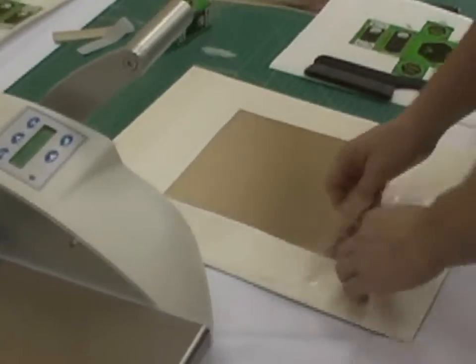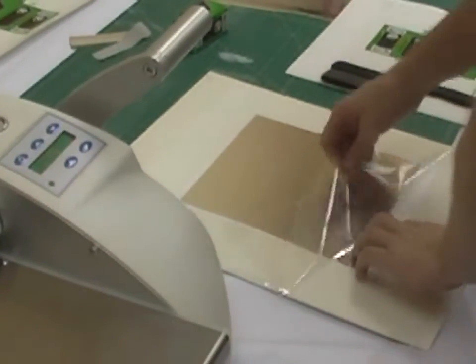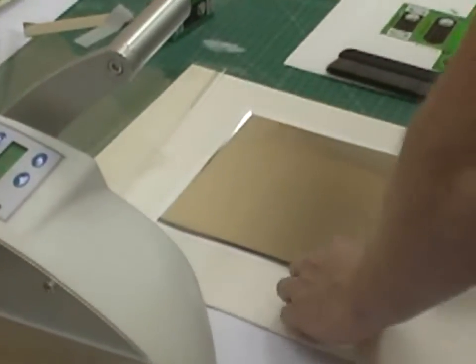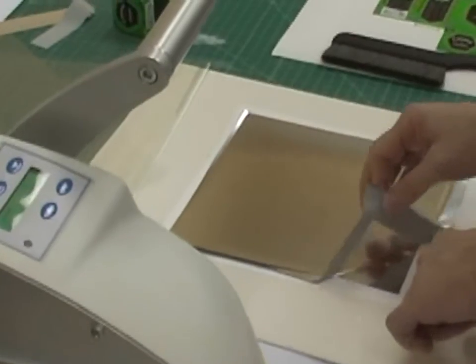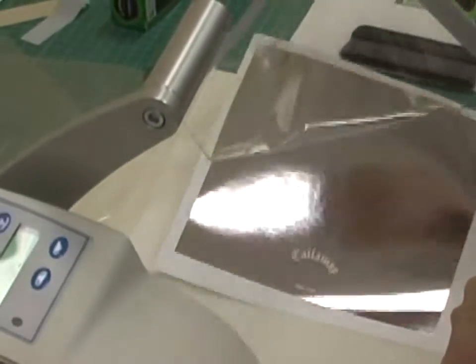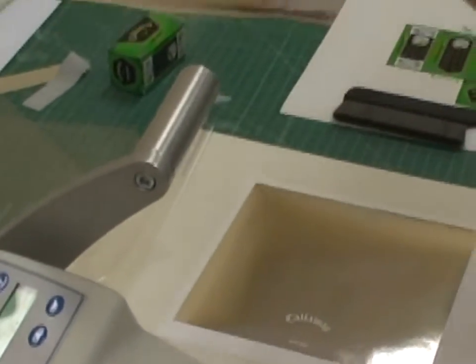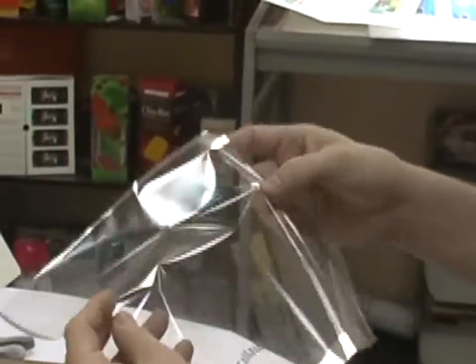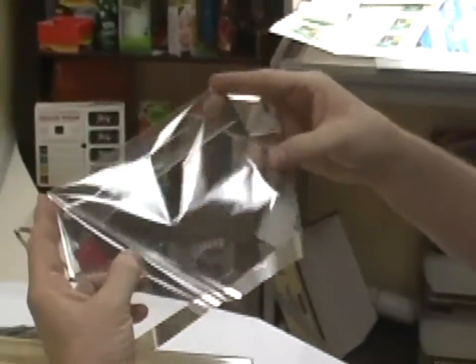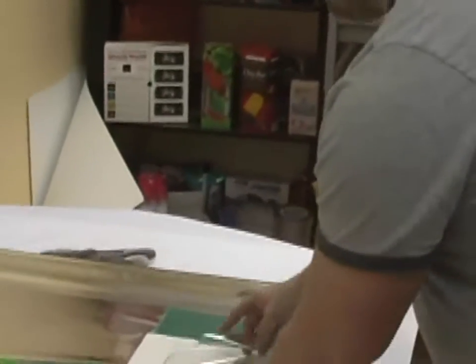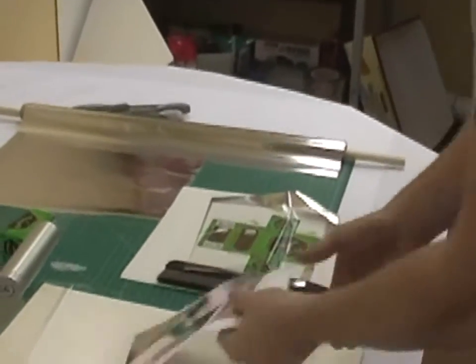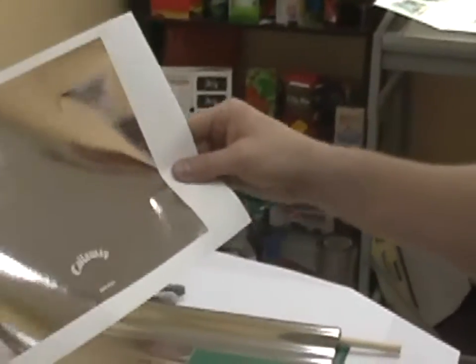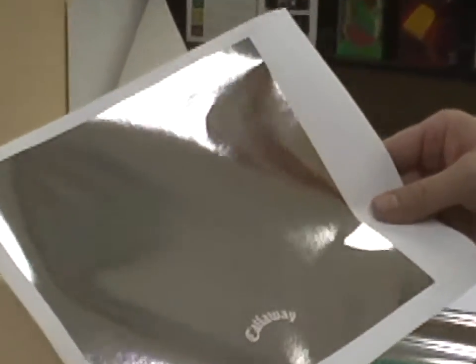Then we pull up the cover sheet. Again, you can peel this when it's hot. This is actually going to be our foil layer that we use to go on top of our transfer. Here's your laser print. This is your throwaway piece—all the excess foil stuck to the toner. This goes in the waste basket.